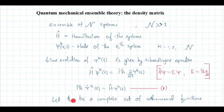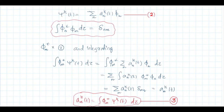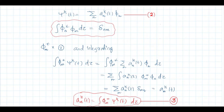Let there exist a complete set of orthonormal functions φ_n. Then we can expand the wave function ψ_k in terms of these orthonormal functions. The expansion coefficients are a_nk(t), and since the φ_n's are orthonormal, the inner product ∫φ_n* φ_m dτ = δ_nm. To find the expansion coefficients a_nk, we take the inner product of ψ_k with φ_m: ∫φ_m* ψ_k dτ = Σ_n a_nk ∫φ_m* φ_n dτ = Σ_n a_nk δ_mn.